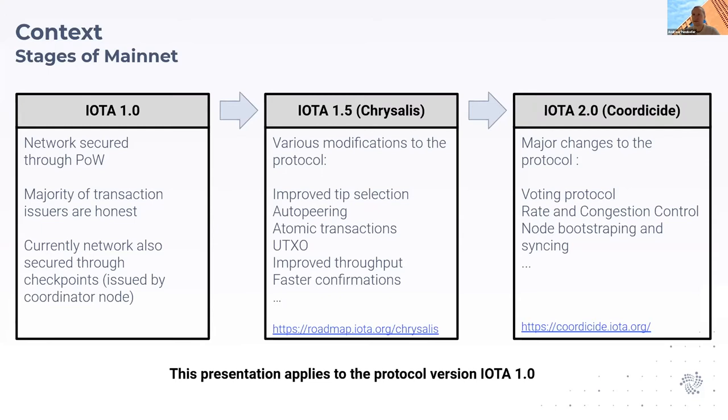In addition, to bootstrap the protocol, the IOTA Foundation is driving a node that issues milestones at regular intervals, and transactions are only considered final after a milestone. In version 1.5, currently in progress, there are several modifications and improvements to the protocol, such as new tip selection mechanisms, auto-peering, and UTXO.